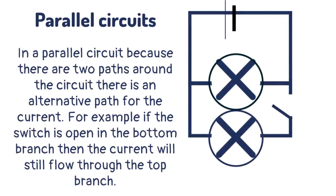The current splits across the branches of parallel circuits but the voltage is the same across all branches. In a parallel circuit, because there are two paths, there is an alternative path for the current. For example, if the switch is open in the bottom branch, the current will still flow through the top branch, meaning the top bulb will light but the bottom bulb will not.